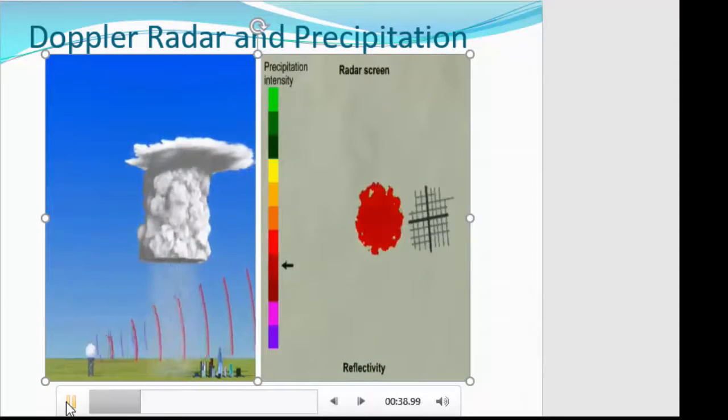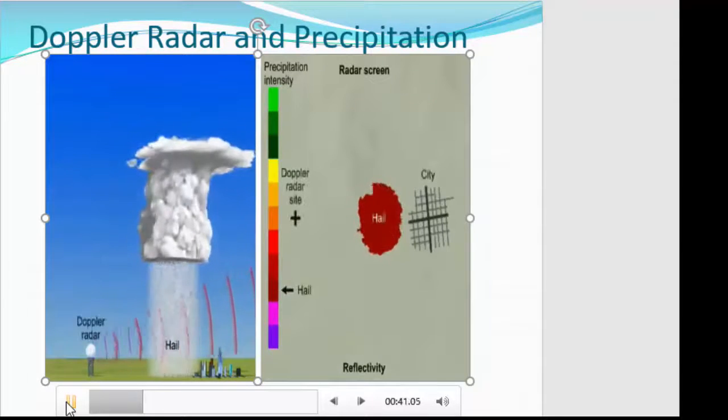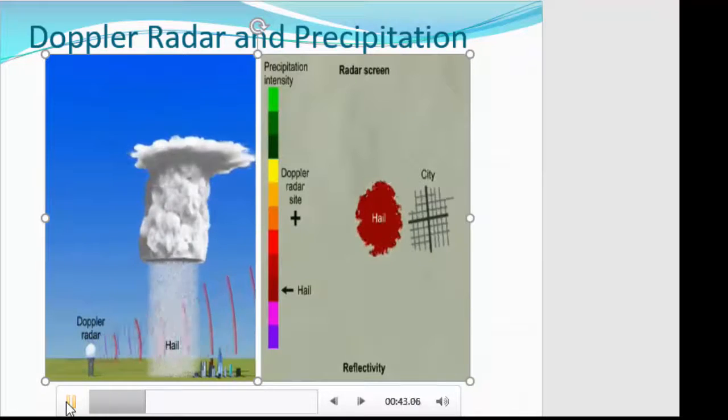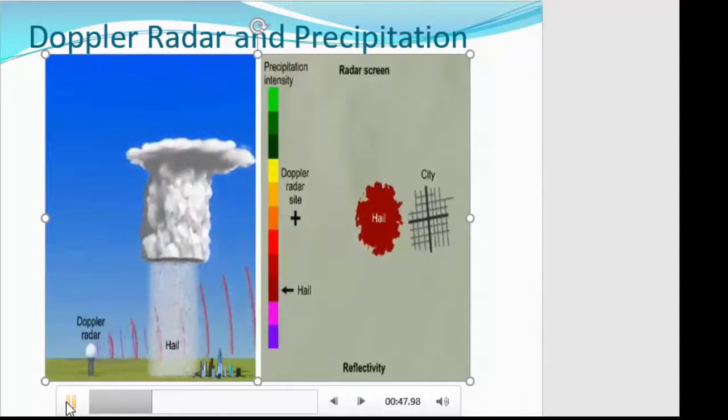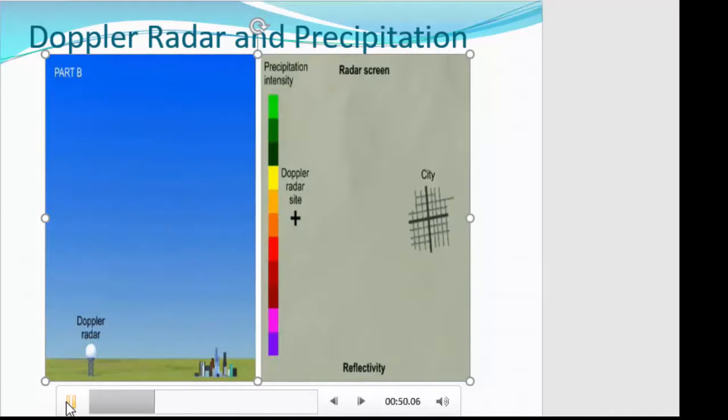So as this continues, the cloud begins to dissipate and the rain starts to weaken. And now we see hail falling out. This really paints us this dark red. The hail reflects back a great deal more of the radar pulse, and so it paints it as a darker red.